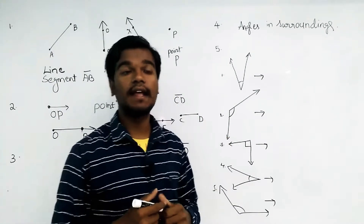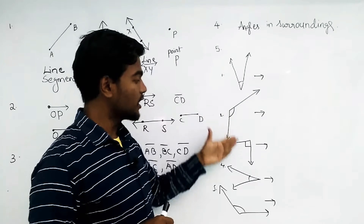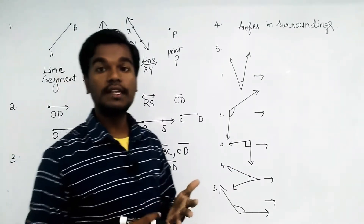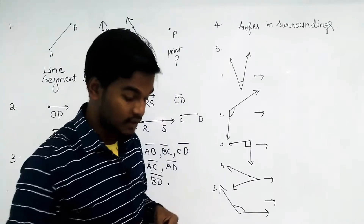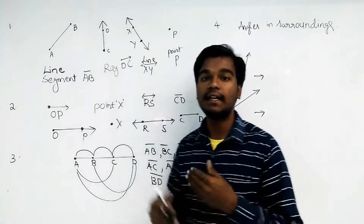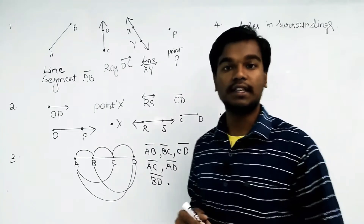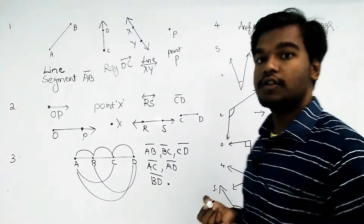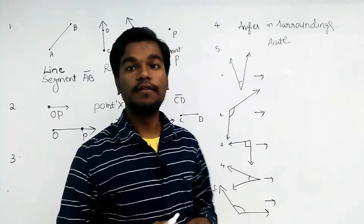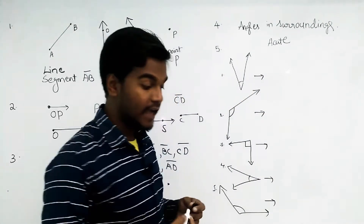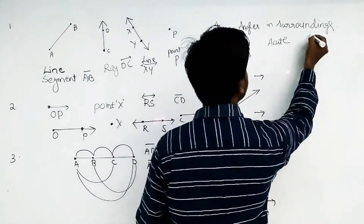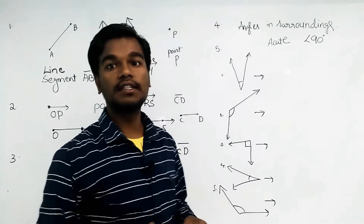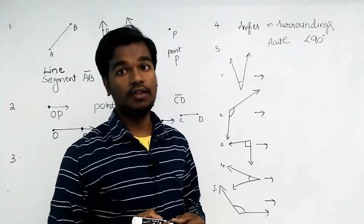For the fifth question, we need to identify what type of angles are shown — acute, obtuse, or straight. First, we should know the significance of each type. An acute angle is when the angle is less than 90 degrees — if the angle is less than 90 degrees, we call it an acute angle.